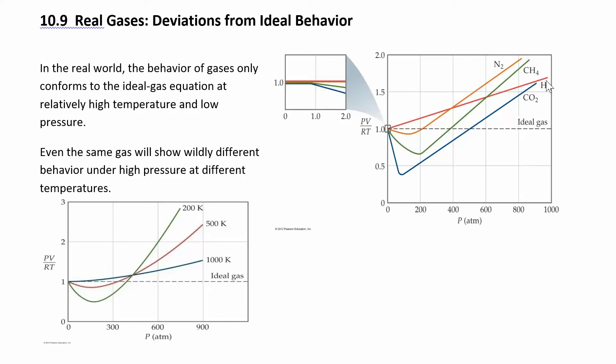If you increase the pressure at high pressure, gases will no longer behave like ideal gases. At high pressure, the molecules start to see each other more. You're forcing them to be together.